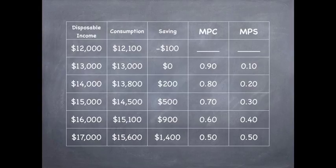Next, we have $14,000 for disposable income, $13,800 for consumption, $200 for savings, a change in consumption of 0.80, and a change in savings of 0.20.